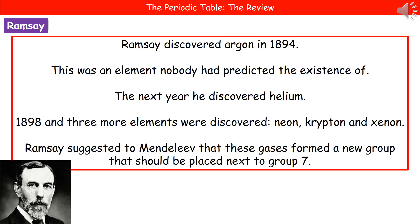Another scientist who made key contributions to the development of the Periodic Table was Ramsey. He discovered argon in 1894. This was an element that nobody had actually predicted existed. The reason for that is because argon is one of our noble gases — it has a full outer shell of electrons and is therefore really unreactive.